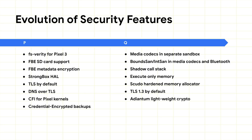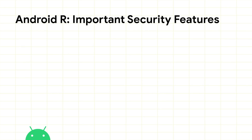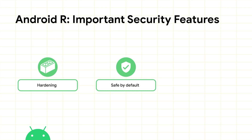We're very glad today that Android is the most widely adopted and secure personal computing OS. Let's take a look at Android R and some key security features we've invested in. Over the past year, we've tried to make Android safe for our users out of the box. Broadly, the work we've done falls into three buckets: hardening, safe by default, and finding new ways to enable new use cases.